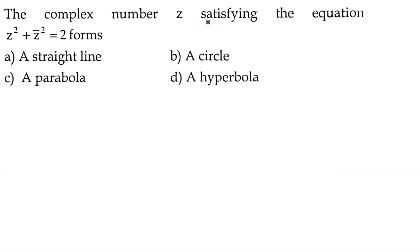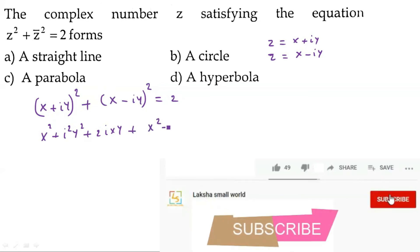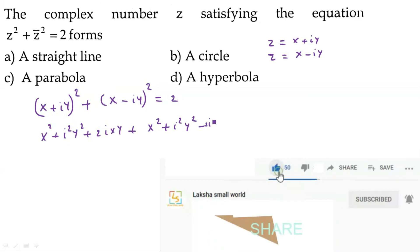Next problem: the complex number z satisfying z² + z̄² = 2 forms which curve — a straight line, a parabola, or a hyperbola? Let z = x + iy, so z̄ = x - iy. Then z² = (x+iy)² = x² + i²y² + 2ixy, and z̄² = (x-iy)² = x² + i²y² - 2ixy.